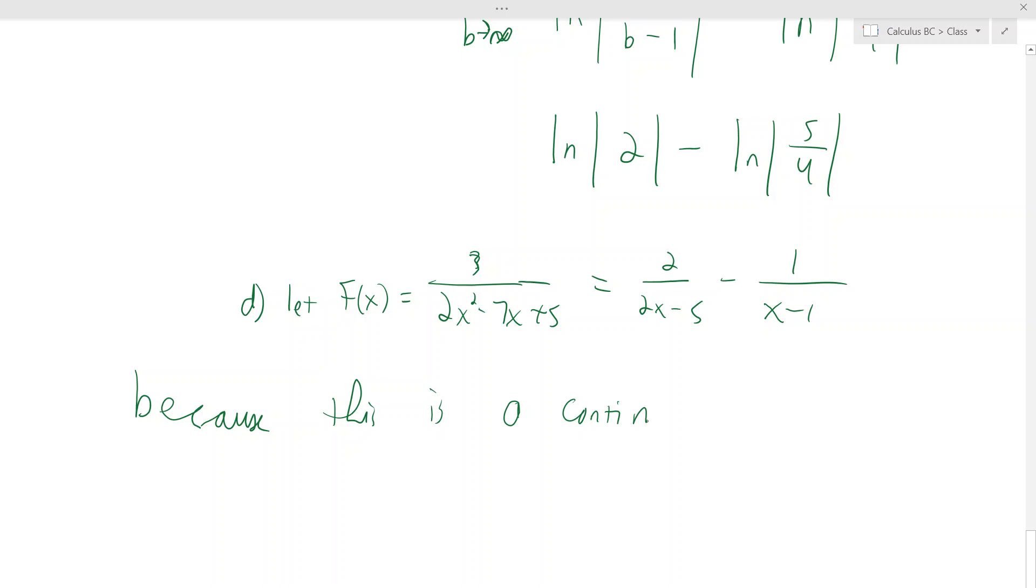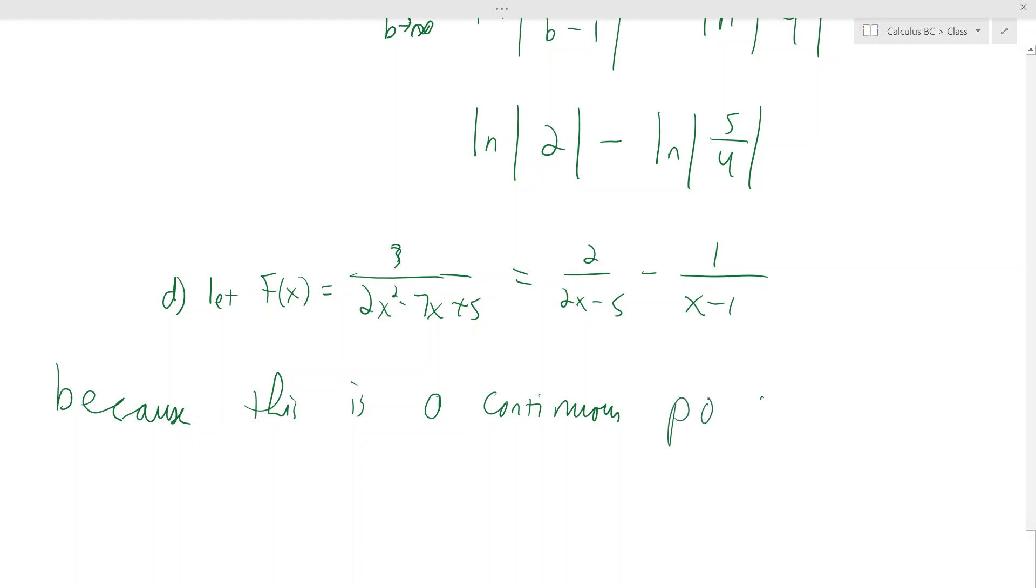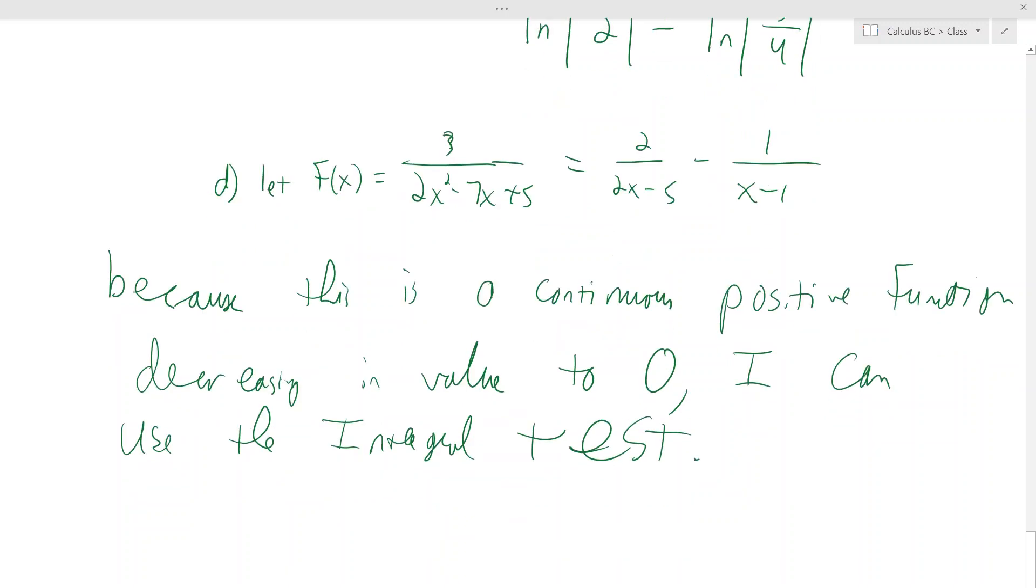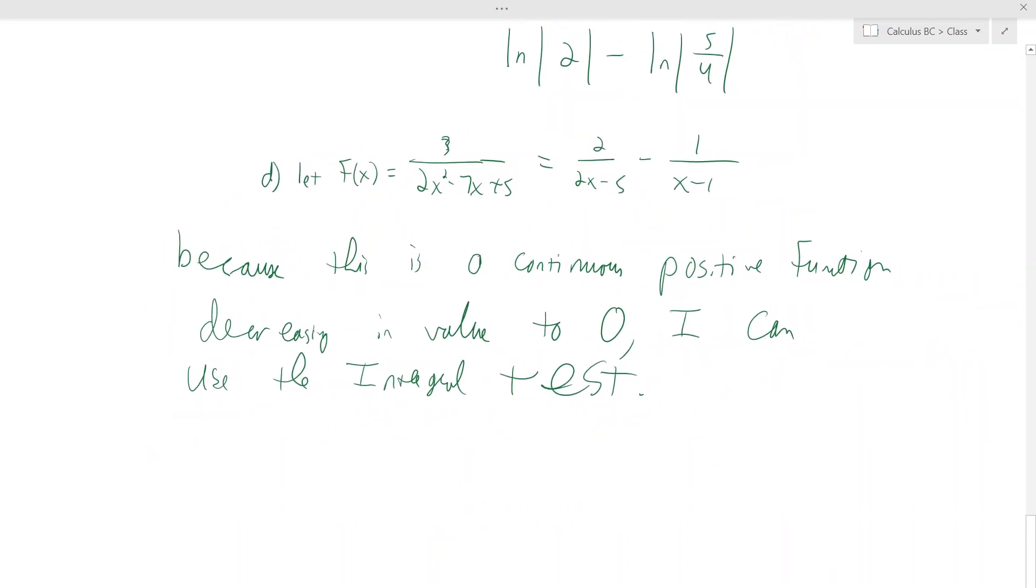Because this is, so basically they're right at the rule for an integral test, right? A continuous positive function, decreasing in value to 0. I can use the integral test. And all the integral test says is if the integral converges, the series converges, as long as these conditions are met here.